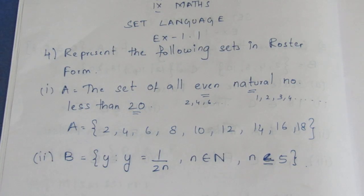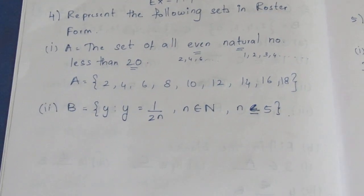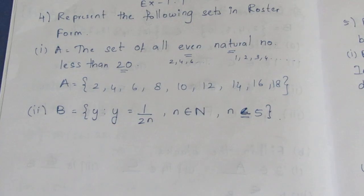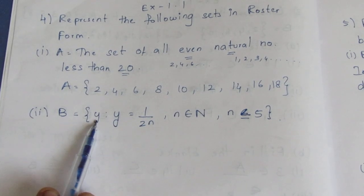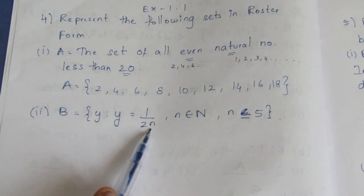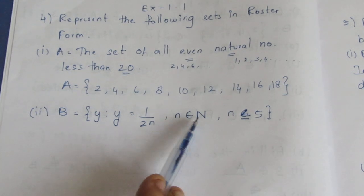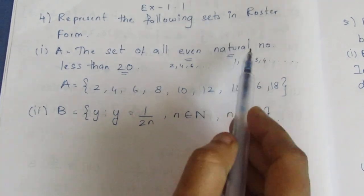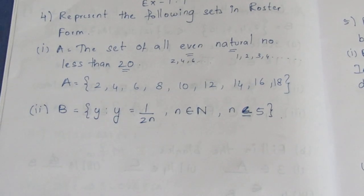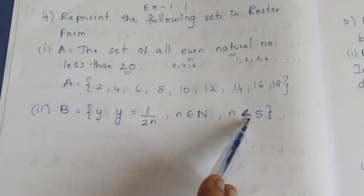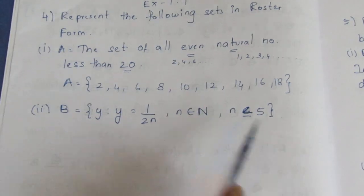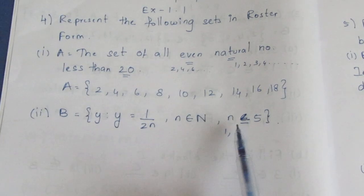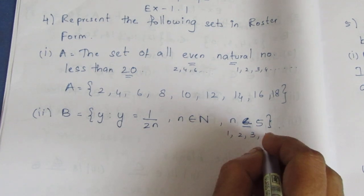So if you look at natural numbers, N belongs to N means natural numbers. We write natural numbers where N is less than or equal to 5. Natural numbers start with 1: 1, 2, 3, 4 — less than or equal to 5.